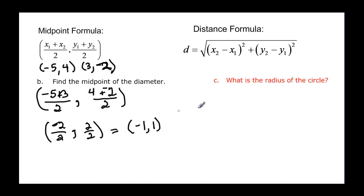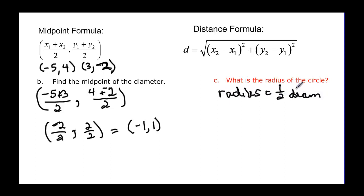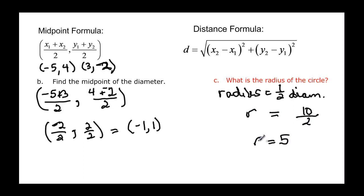It asks us what the radius of the circle is. The radius is equal to half of the diameter. We knew the diameter was ten, so we divide that by two, and the radius is going to be equal to five.